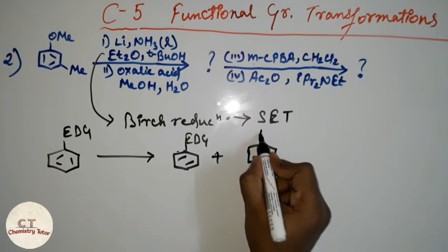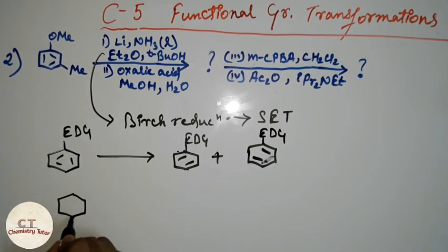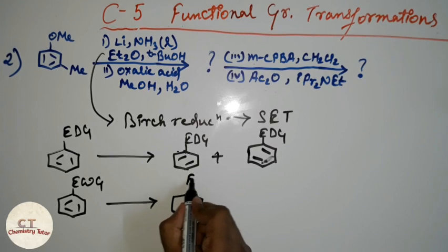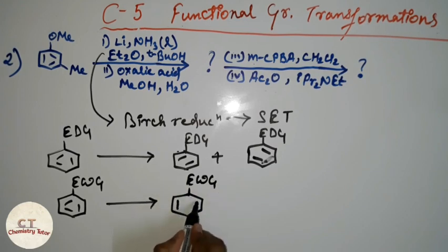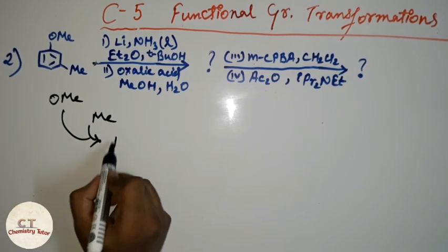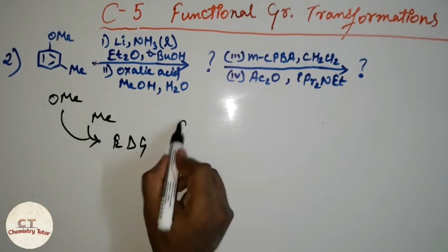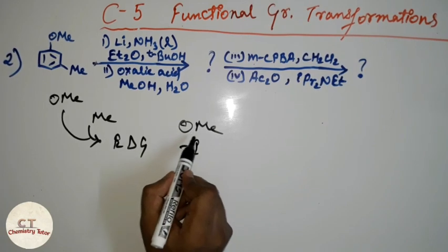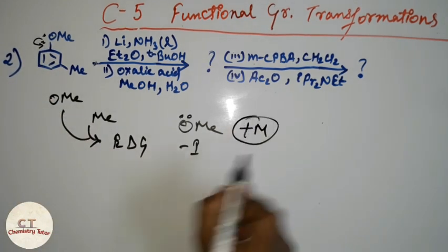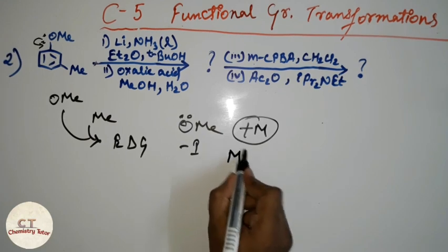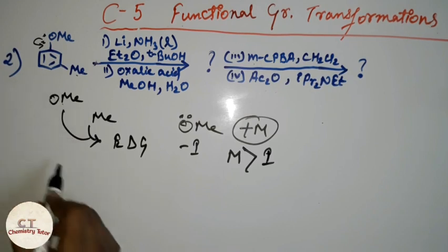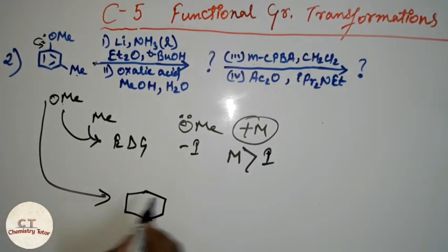Whenever there is an electron-withdrawing group, Birch reduction gives a double bond not attached to that carbon. In this reaction, OMe and methyl are both electron-donating groups. Do not think OMe is electron-withdrawing just because of the inductive effect; OMe has a lone pair that undergoes mesomeric effect, and the mesomeric effect dominates over the inductive effect. So finally, we have two electron-donating groups in this compound.